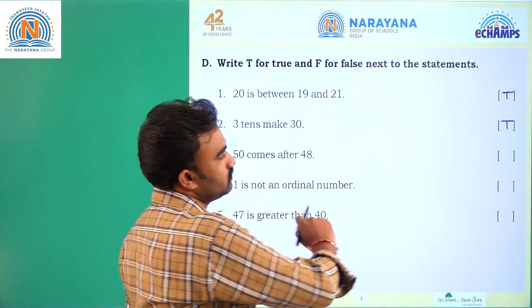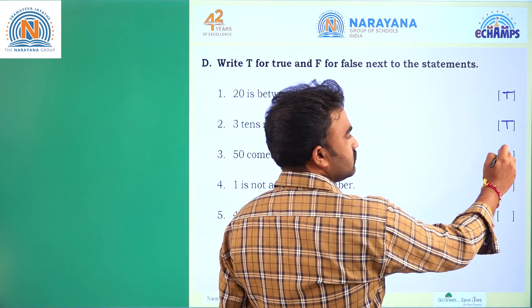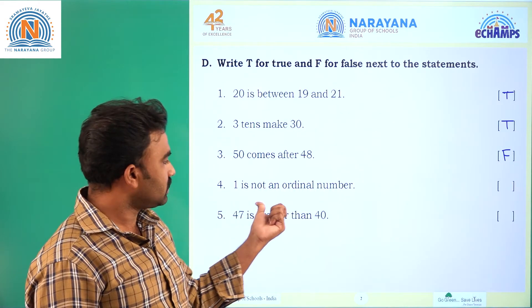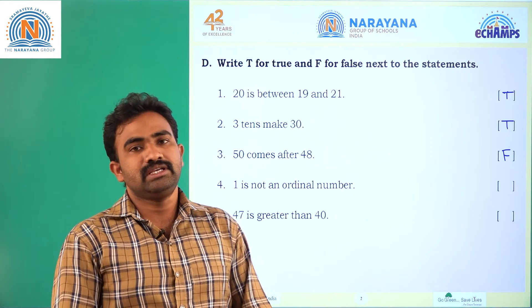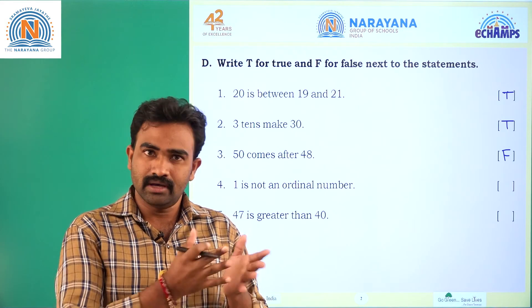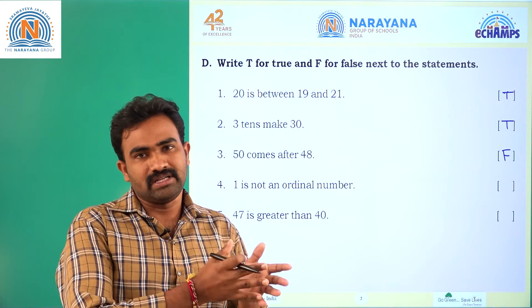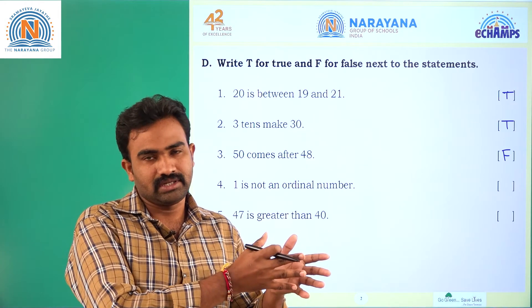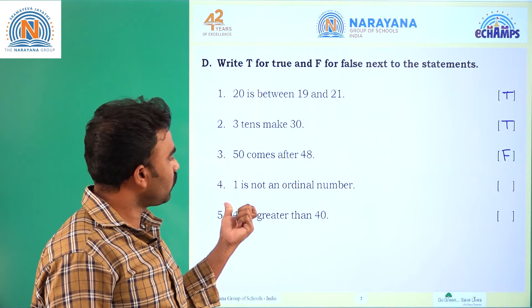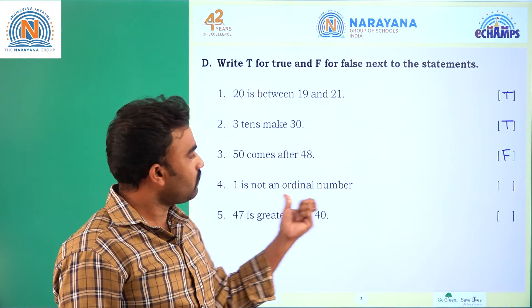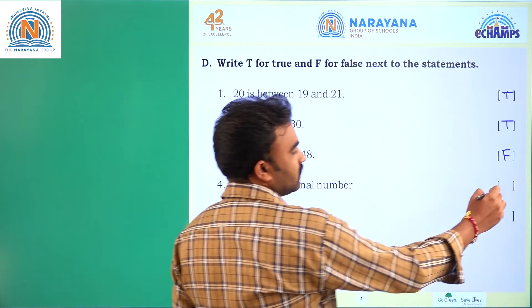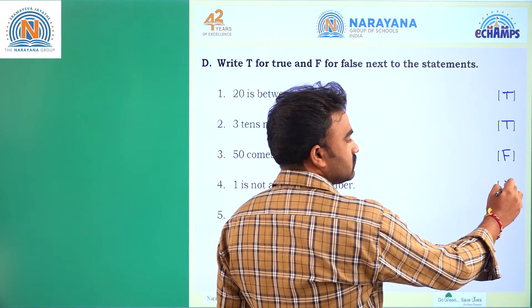Next one: one is not an ordinal number. Ordinal numbers tell the position of a person or an object. Here, one is not an ordinal number — yes, that is correct. So this statement is true.